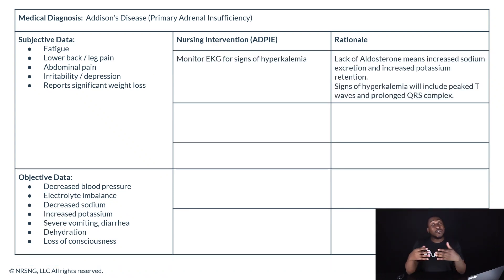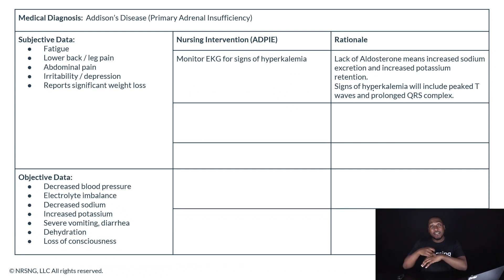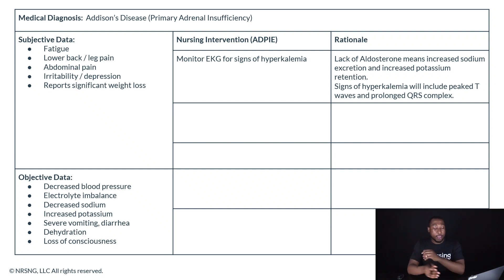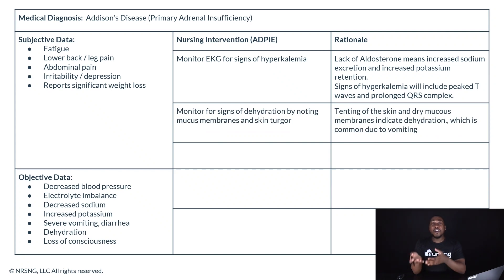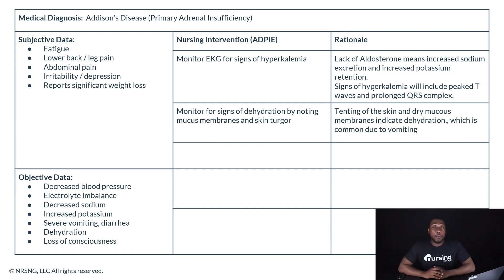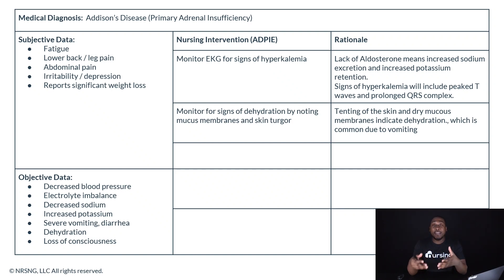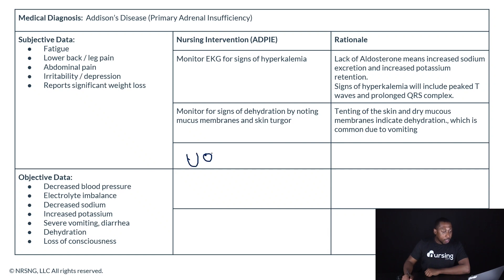Next, we want to monitor for signs of dehydration — assess their mucous membranes and skin turgor. If a patient tents when you assess skin turgor, that means they are dehydrated, which is very common with severe diarrhea and vomiting. We want to encourage oral fluids when possible, monitor ins and outs, and institute IV fluids if they are not able to take PO due to vomiting. Low cortisol levels mean they can't maintain adequate sodium, and they will have decreased, concentrated, darker urine output.